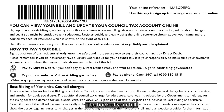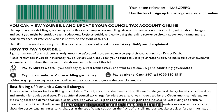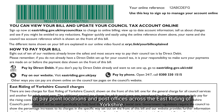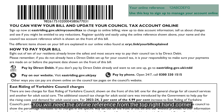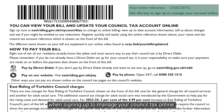The back of your bill has a barcode which can be used to pay your council tax bill at PayPoint locations and post offices across the East Riding of Yorkshire. You will need the online reference from the top right-hand corner when signing up to manage your council tax online.